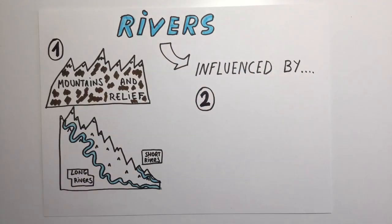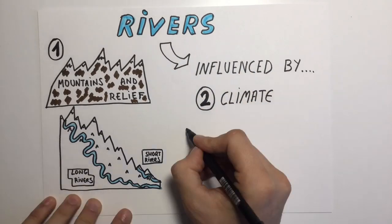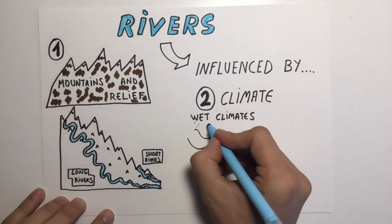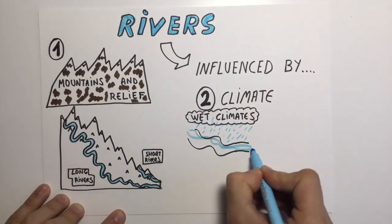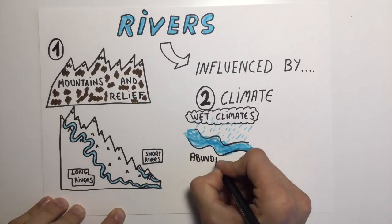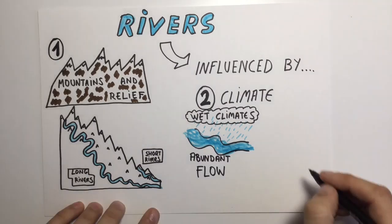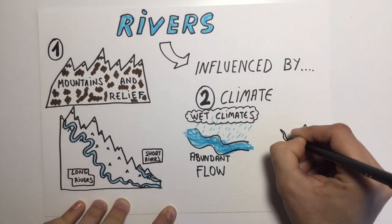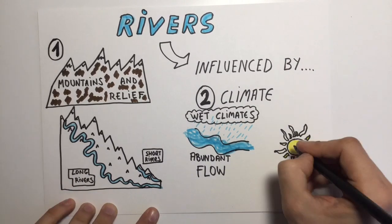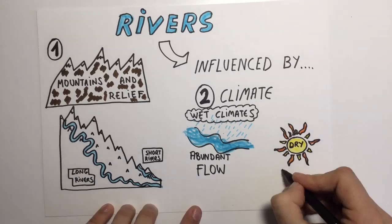The climate also affects the flow of the rivers. Rivers in wet climates have an abundant flow. Rivers in drier climates have an irregular flow.